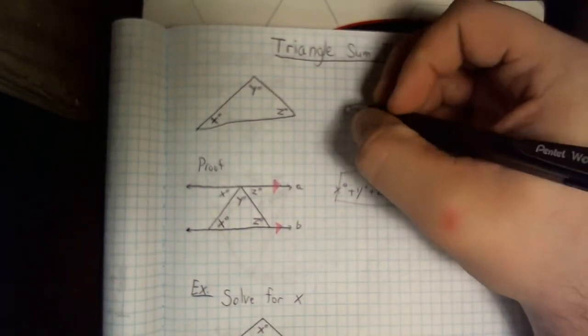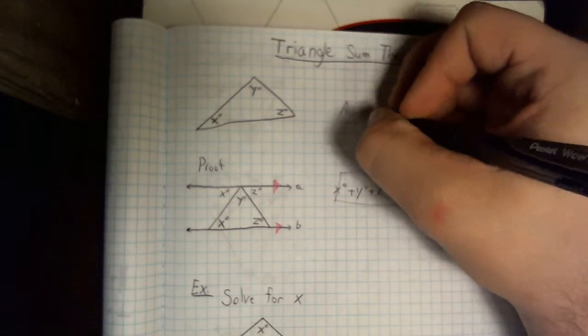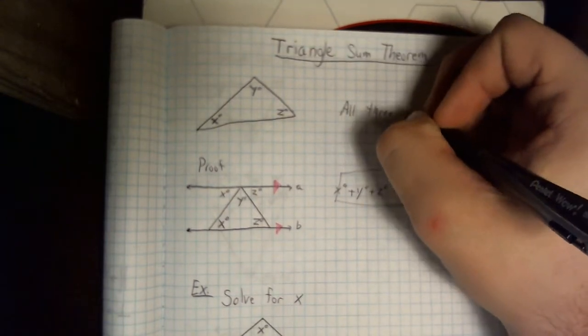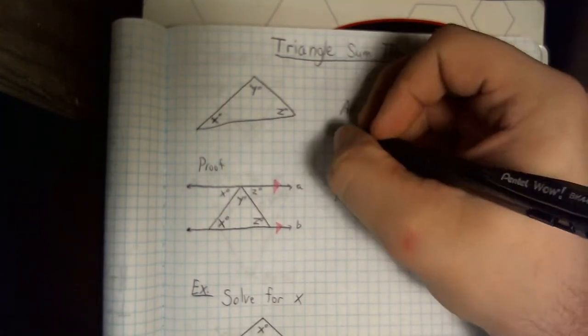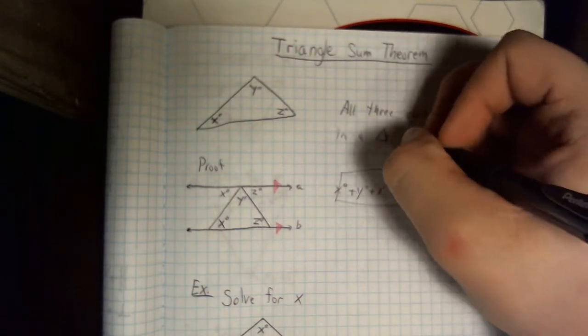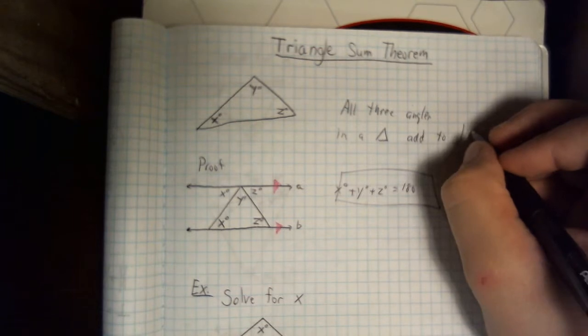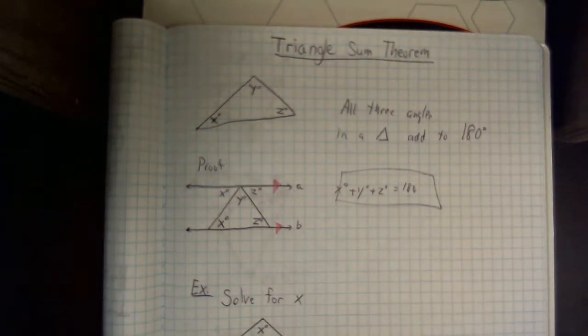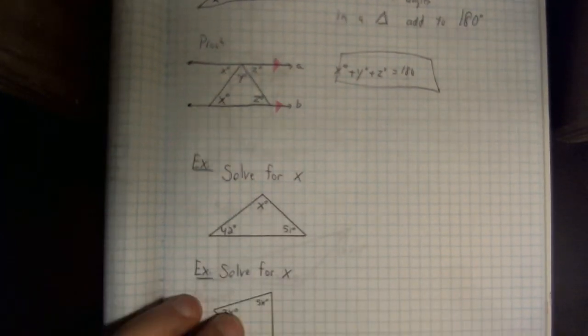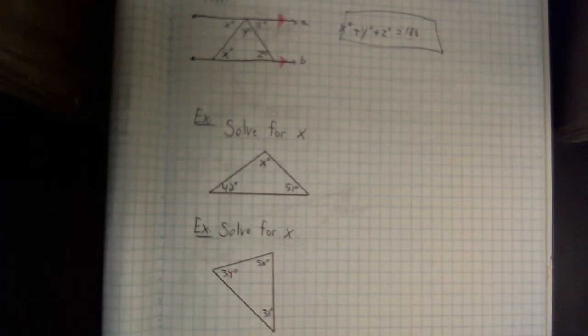So triangle sum theorem says all three angles in a triangle add to 180 degrees. That's key for these problems. Let's take a look at how some of these work.